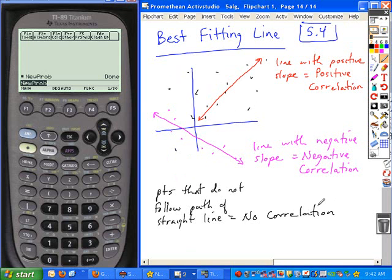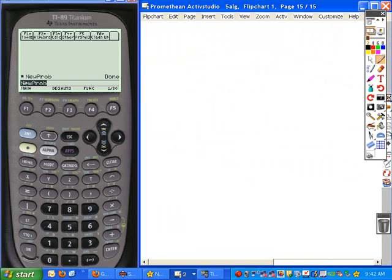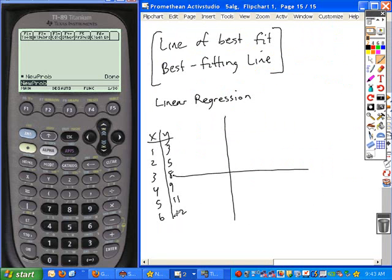Once something has a correlation, so if it looks like it can be modeled with a straight line, then what we're going to do is find that best-fitting line, and we do that using what? Do you guys remember what it's called?